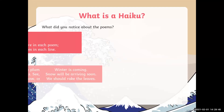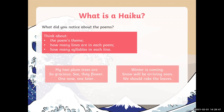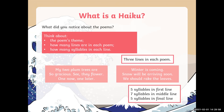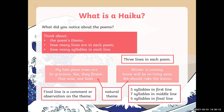So what did you notice about those two poems? Think about the poem's theme, how many lines are in each poem, and how many syllables in each line. Did you spot that there's only three lines in each poem? In the first line of each poem there are only five syllables, in the second line there are seven syllables, and in the final third line there are five syllables again. Both poems have a natural theme, and the final line is a comment or observation on the theme.